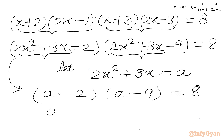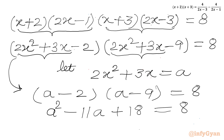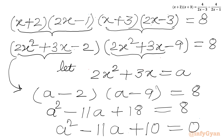We will multiply these two brackets: a² - 9a - 2a + 18 = 8. So our quadratic comes out as a² - 11a + 10 = 0.